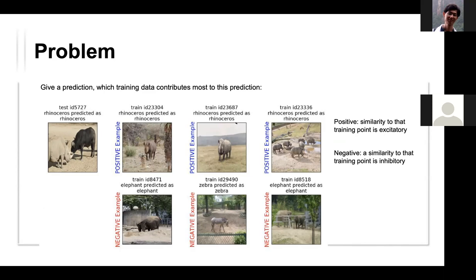To rephrase: the leftmost image is the correct prediction — the rhinoceros is predicted as rhinoceros. To explain why the prediction is correct, we select three excitatory training examples that help the model classify it as a rhino, and three inhibitory training examples that work against the prediction. These excitatory data samples help the model analyze this as a rhino.